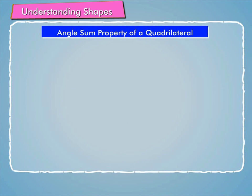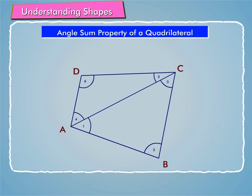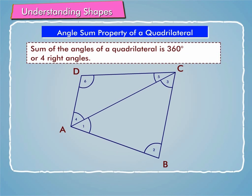Let us now learn about the angle sum property of a quadrilateral, which says the sum of the angles of a quadrilateral is 360 degrees, or 4 right angles.